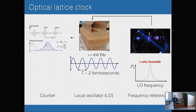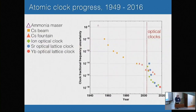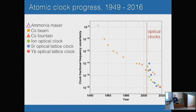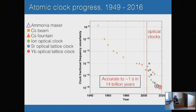Your counter is now a laser frequency comb. Doing this, there's been tremendous progress in the performance of clocks — a combination of both the stability and the systematic uncertainty. As Andrew already referenced, we're now at a performance level where these clocks are accurate to one second in 14 billion years. This is really remarkable.